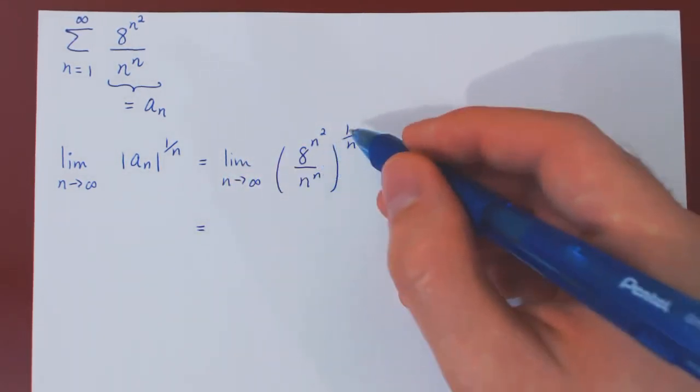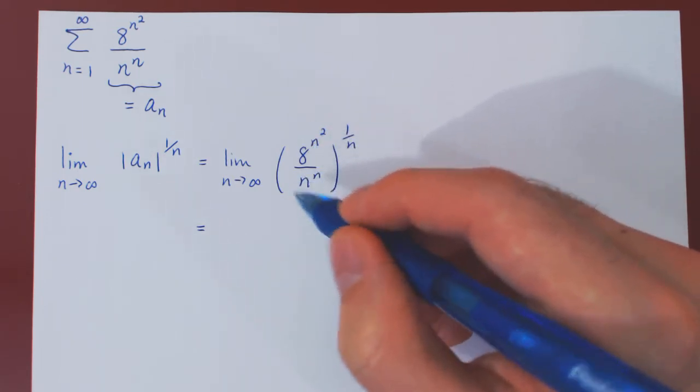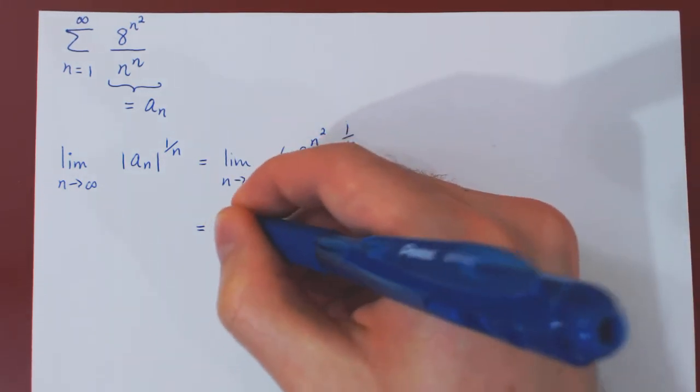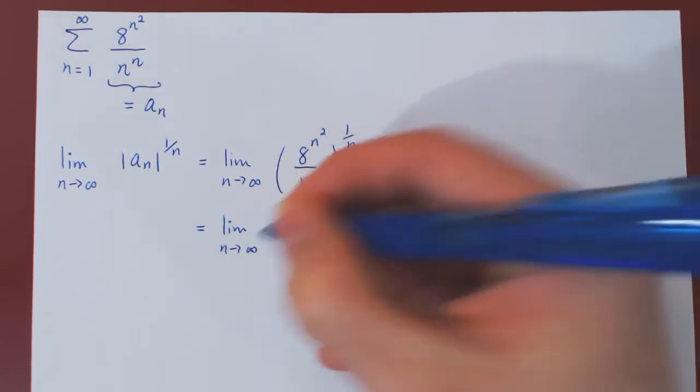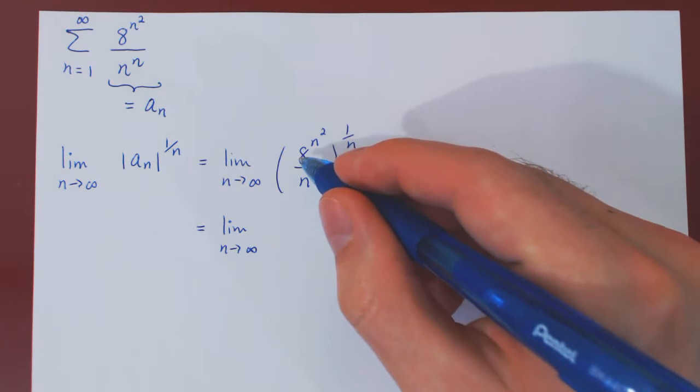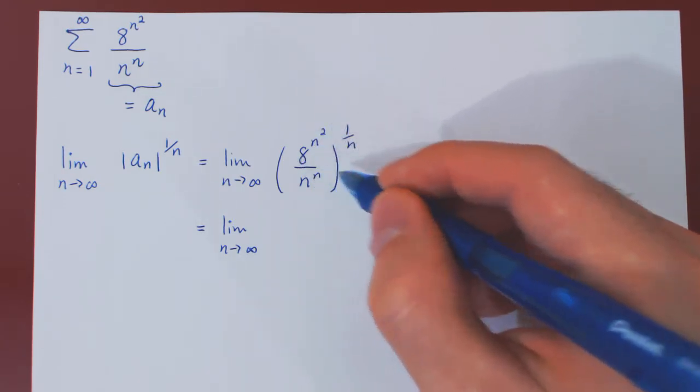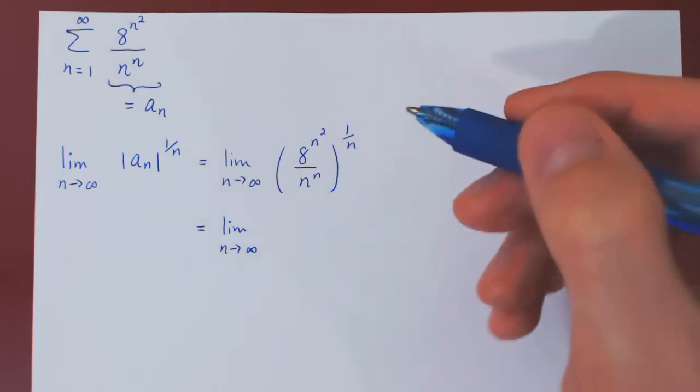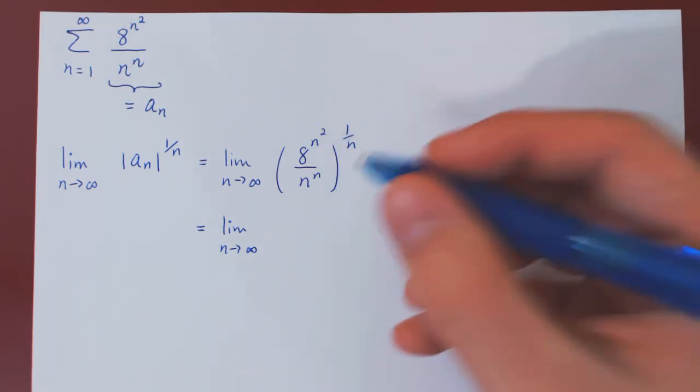Well, we have a power of a quotient, we can apply the exponent to both the numerator and denominator. In both cases, we are double exponentiating, so we raise 8 to the power of n squared, then to the power of 1 over n, in which case we multiply the exponents. n squared times 1 over n is simply n.